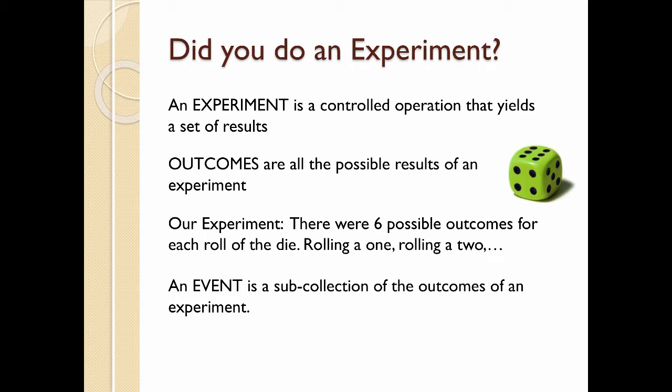We also have the idea of an event, and that's a subcollection of the outcomes of an experiment. An event could just be one particular outcome. So an event might be rolling a 1. So you roll a 1, that was an event. Another event could be defined as rolling a 3 or a 6. So you roll your die, and you're hoping the event that you want to happen is that you roll a 3 or a 6. So an event can be a combination of outcomes.